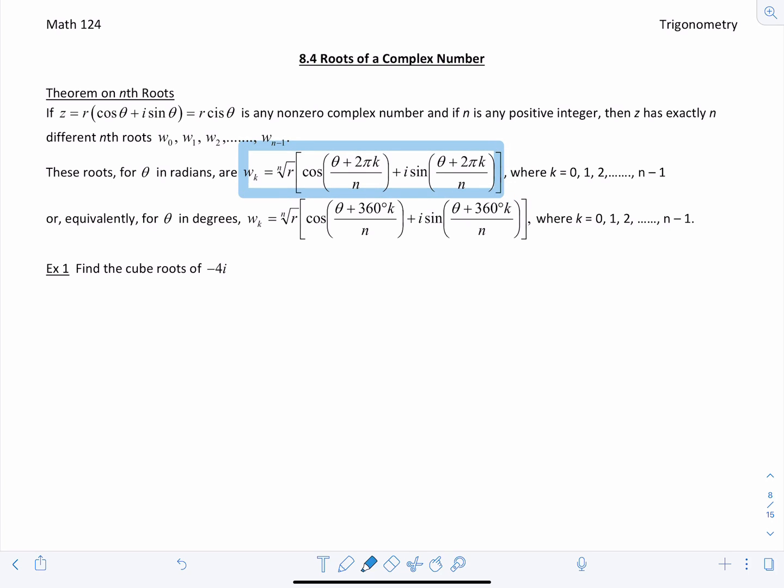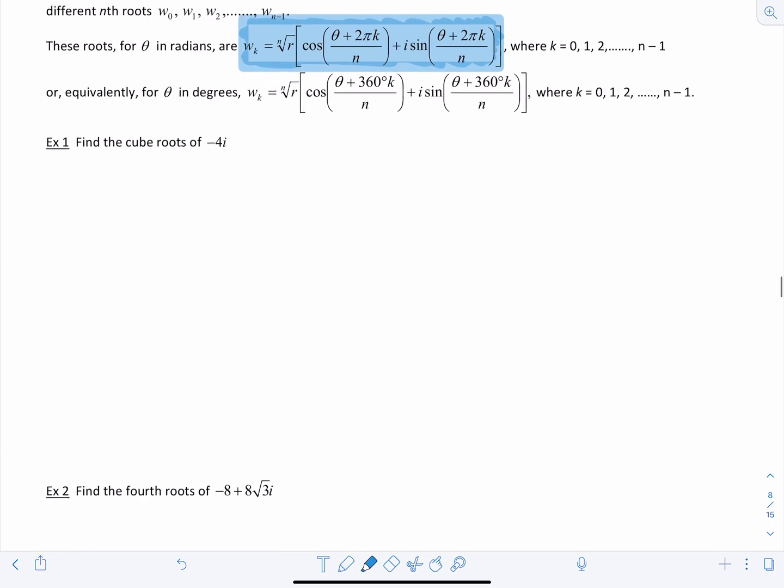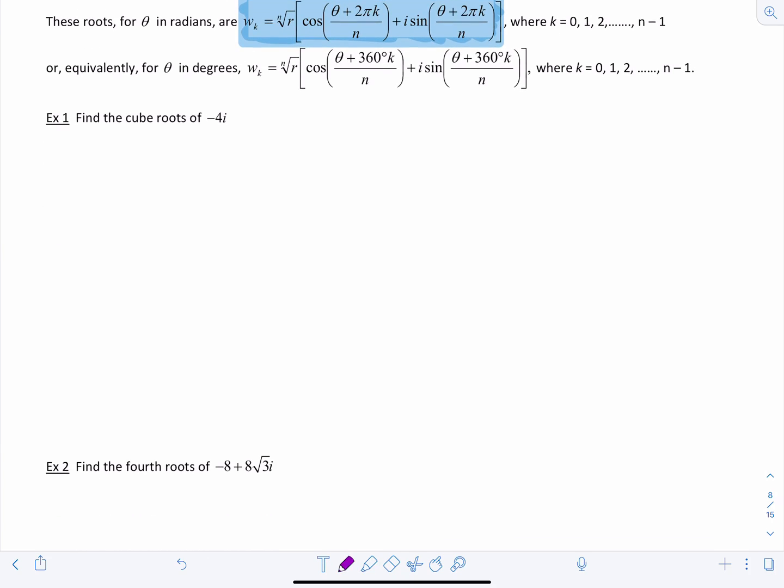It's pretty straightforward, it gets repetitive, you just gotta practice. So memorize this. Okay so here the first one's asking us to find the cube roots of negative 4i, so I want to identify if I'm finding cube roots then that means n equals 3.